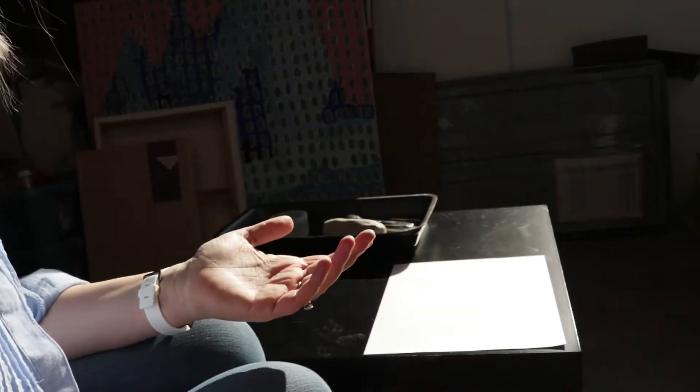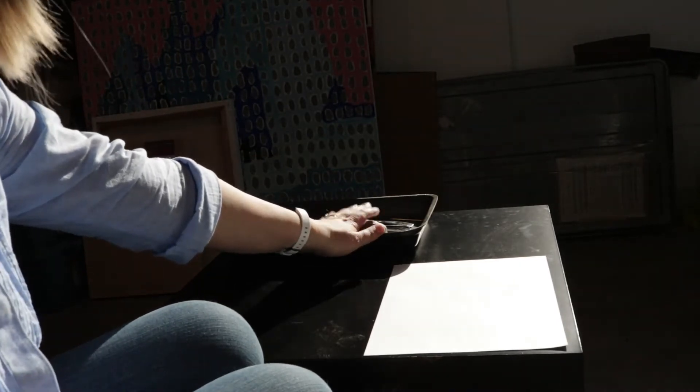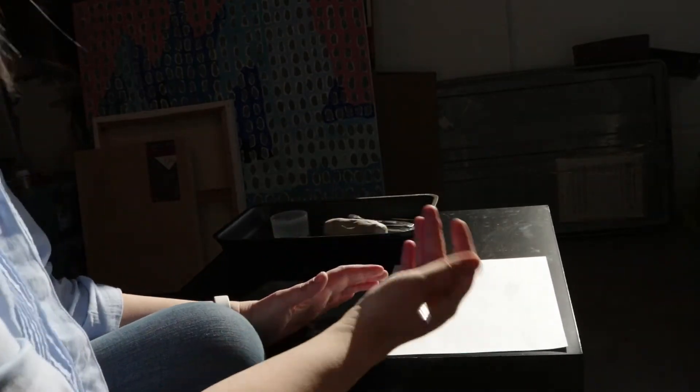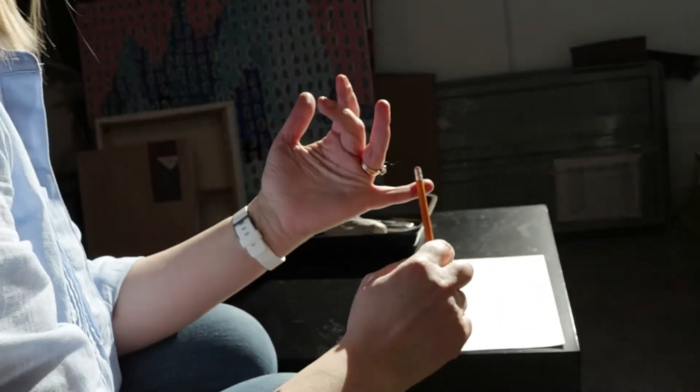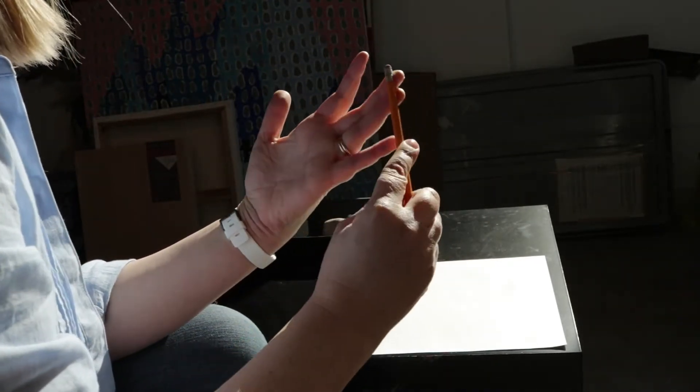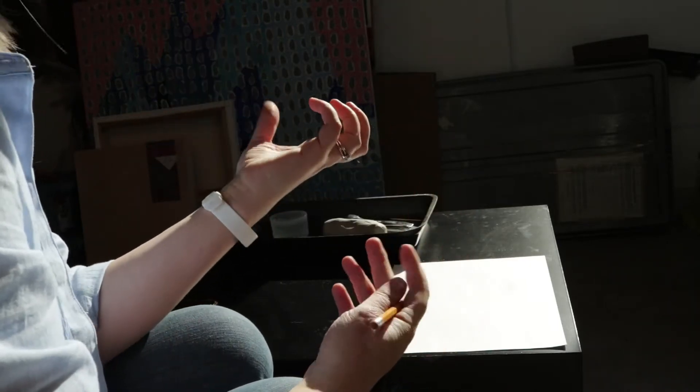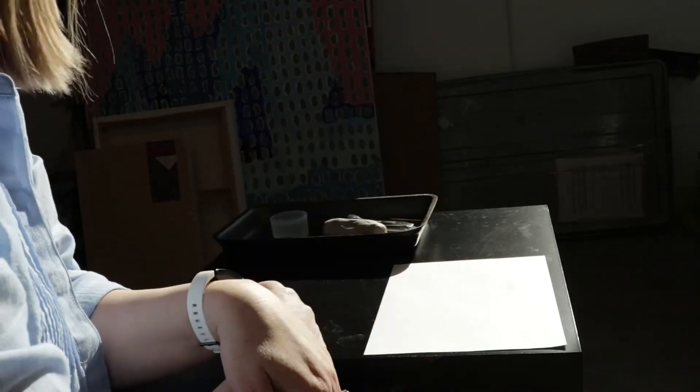So the first thing we're going to do is we're going to sketch out our plan. I find this really helpful because once you start working with the clay you're going to want to move pretty quickly. So one thing I'm going to suggest is since you're trying to think of three things to represent you, try to think of activities or sports or maybe something iconic about your family, or maybe even like something that's just an inside joke works well for this as well.